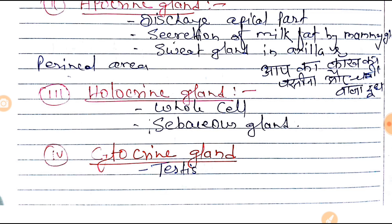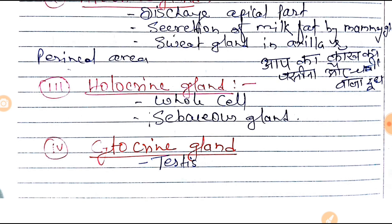Cystocrine gland has been asked in previous year exams in AIIMS PG, PGI Chandigarh, and NEET PG. The example of the cystocrine gland is found in the testis.